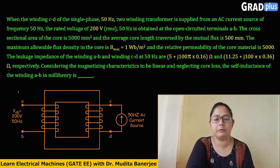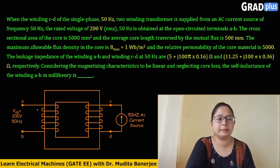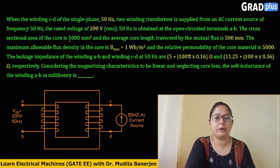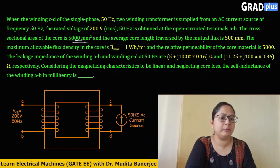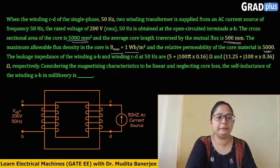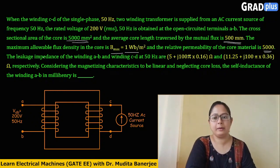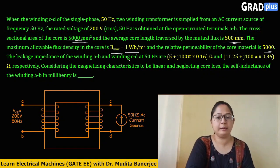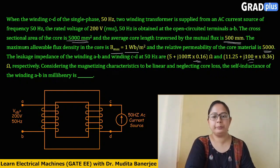Terminals AB are open-circuited — no load is connected. The cross-sectional area of the core is 5000 mm², the average core length traversed by the mutual flux is 500 mm, the maximum allowable flux density BM is 1 Tesla, the relative permeability μR is 5000, and the leakage impedance Z of both windings AB and CD at 50 Hz are also given.